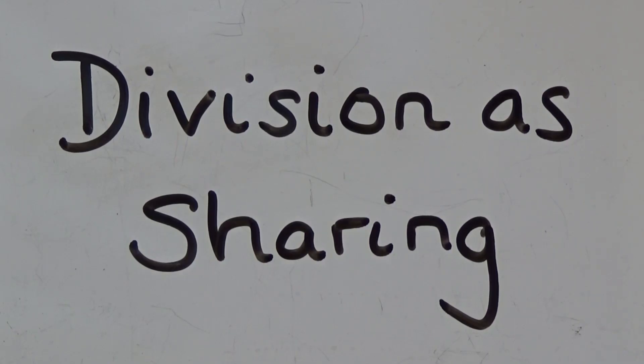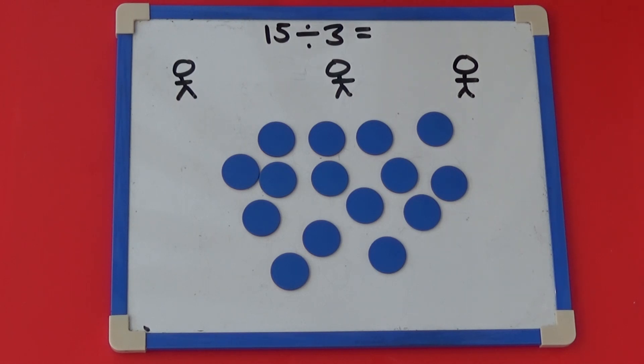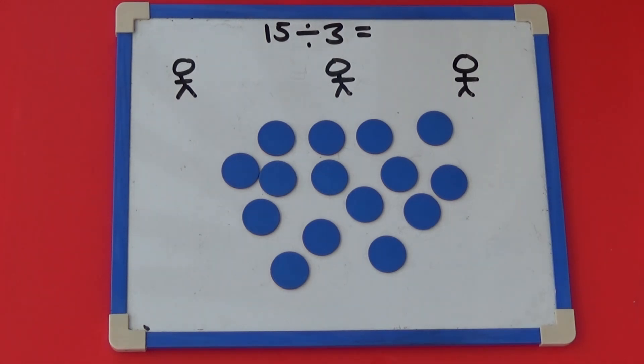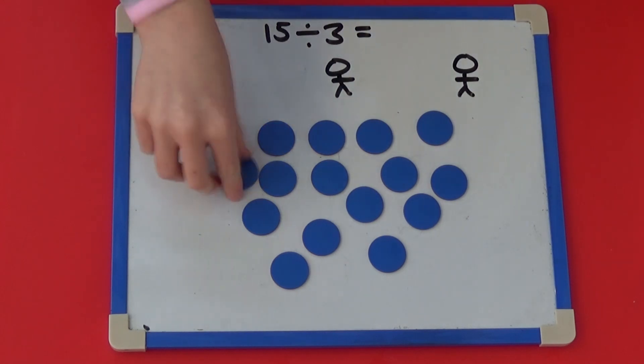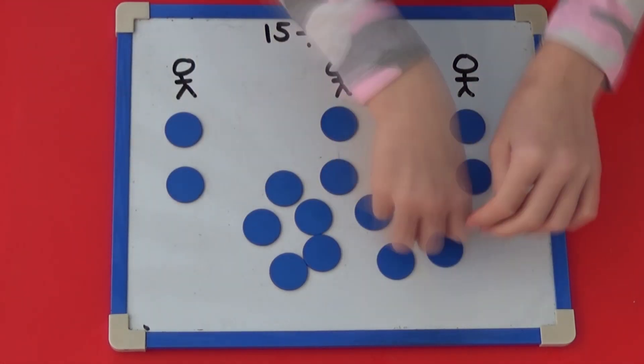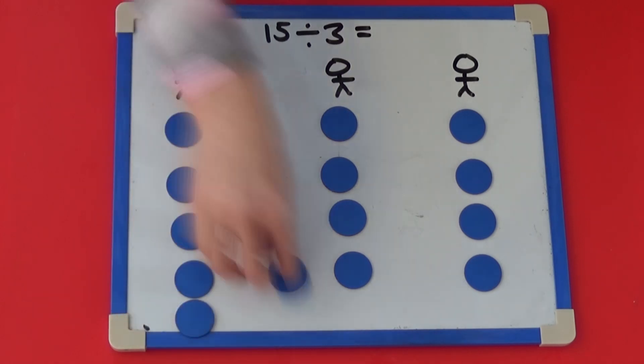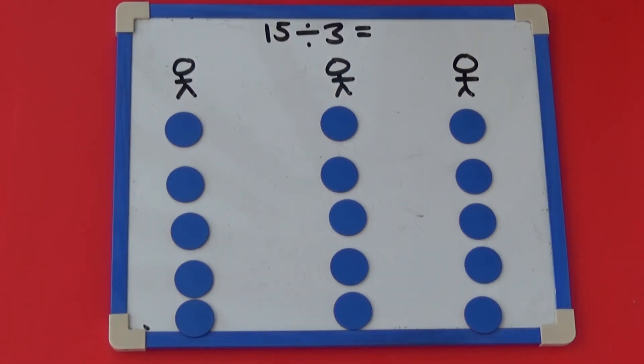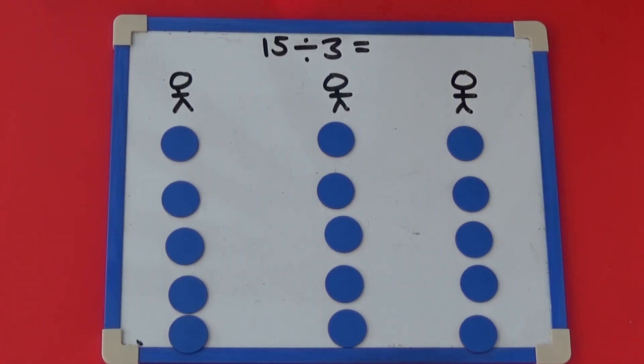First, we're going to look at division as sharing. I have drawn three stick men to help me show how to share the 15 counters between three people. I need to share all 15 counters out equally. So if we share 15 counters between three people, each person will get five counters.